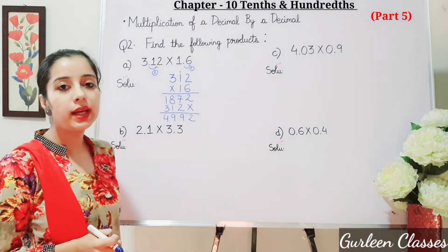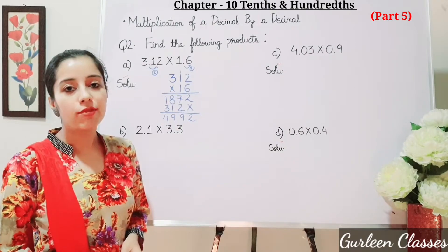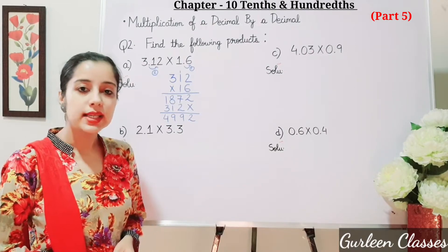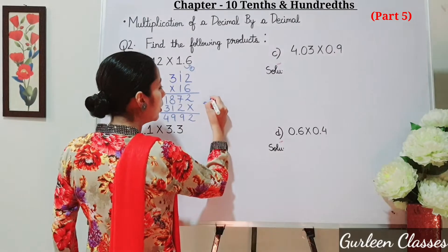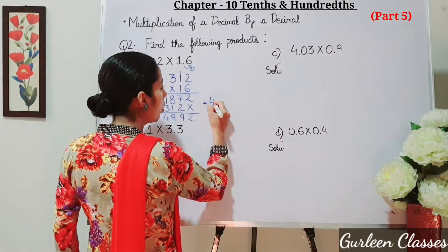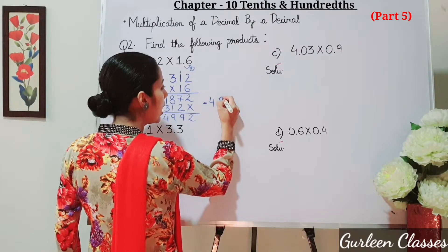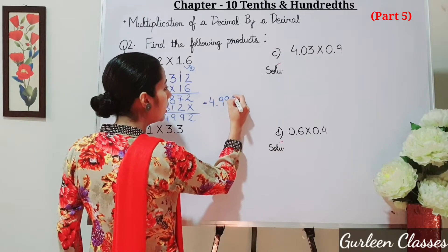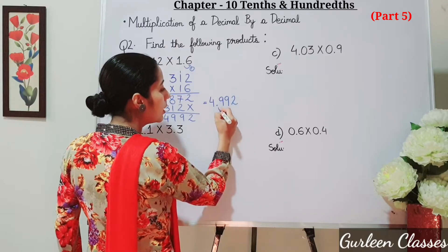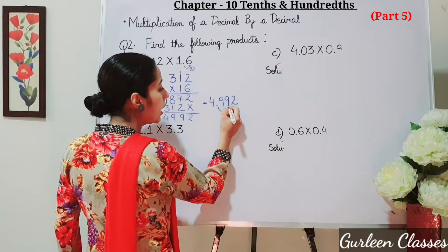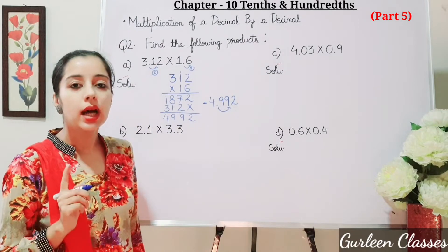So it means that after 3 digits from the right, we have to place the decimal point. So the answer will be 4.992. After the decimal point, there are 3 digits.